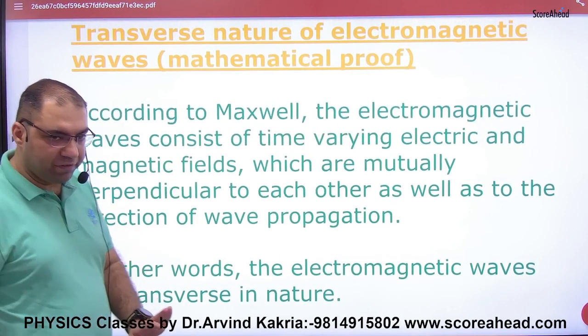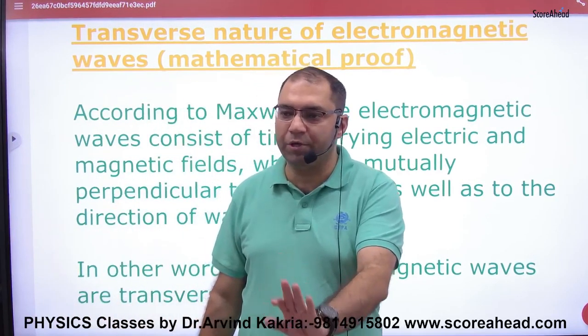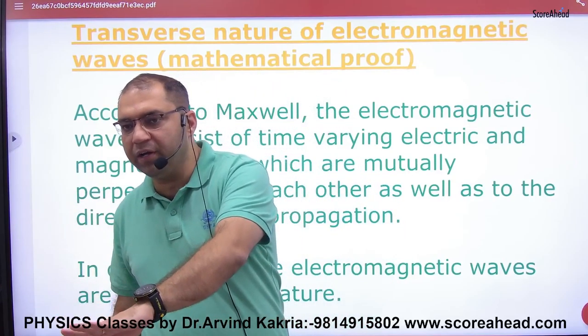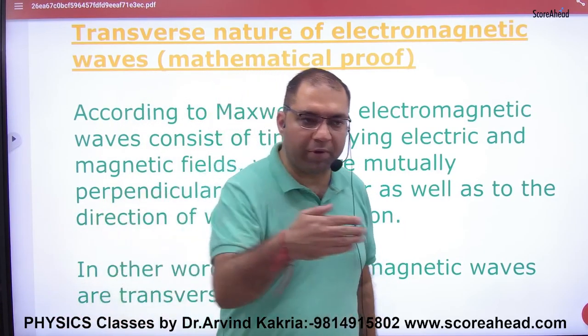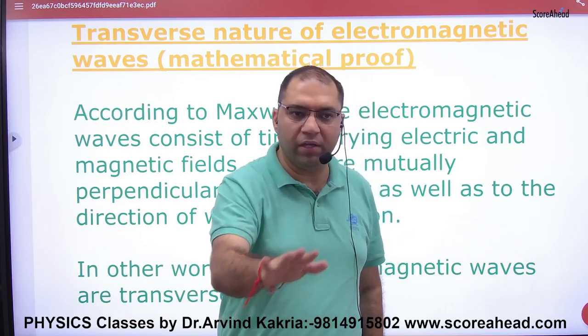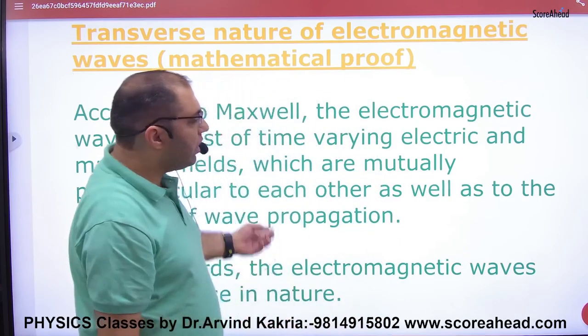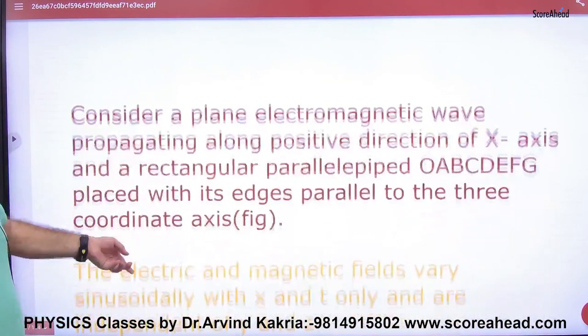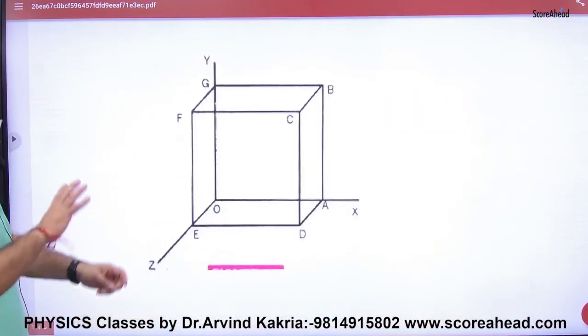Transverse nature of EM wave means that Electric field, Magnetic field and wave propagation are at 90 degrees. So we have to prove this. Suppose EM wave is traveling.